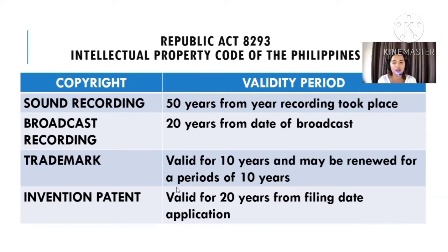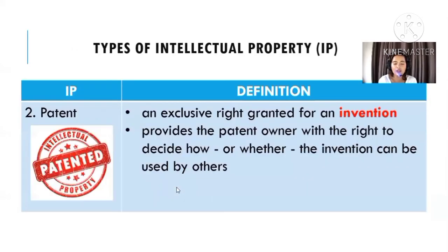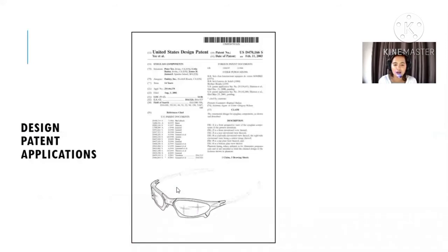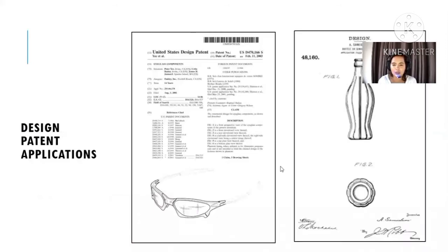Under intellectual property, a patent is an exclusive right granted for an invention. It provides the patent owner with the right to decide how or whether the invention can be used by others. There is a formal patenting process wherein the design and specifications are recorded. Examples of patents include different designs for a sand glass and a bottle glass — each unique design belongs to its designer.